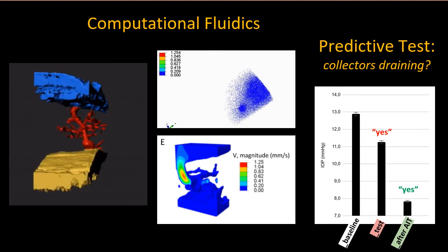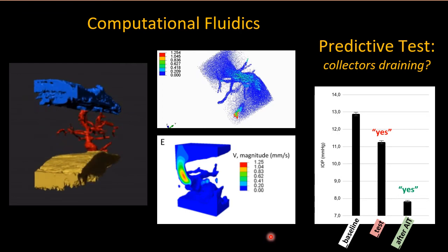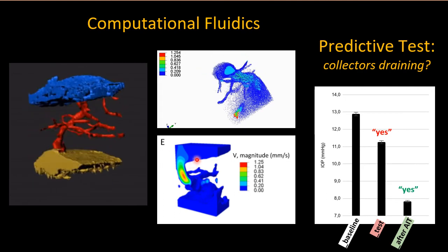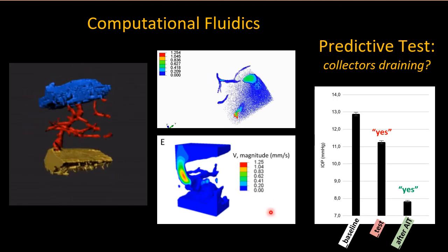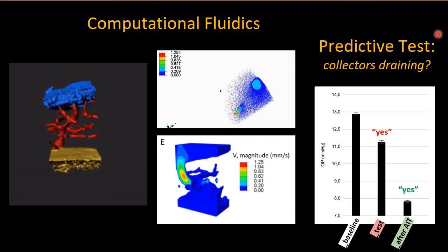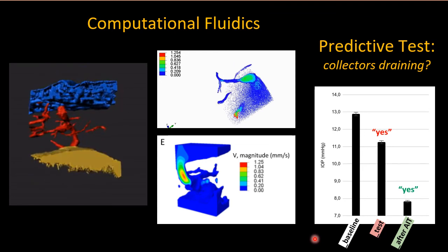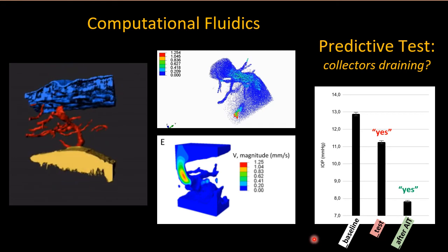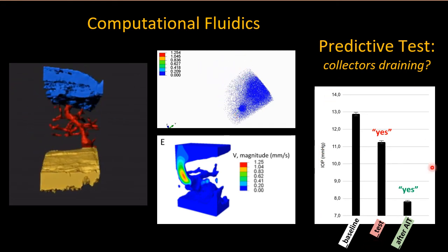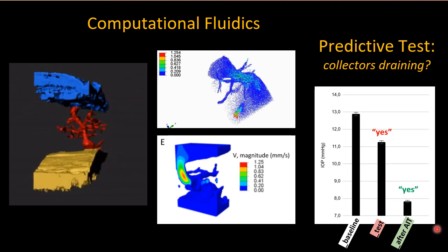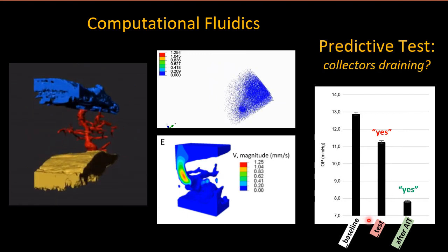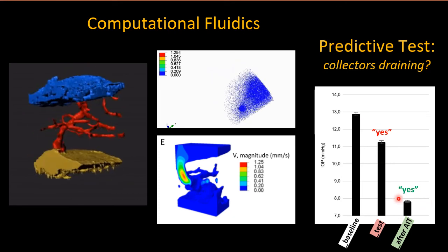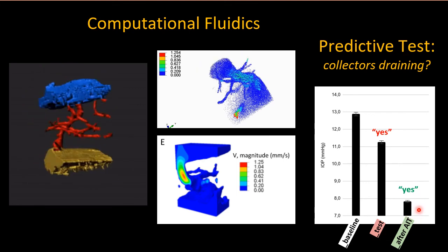As an outlook, we explored computational fluidics, which is challenging but can pinpoint areas of high flow resistance. The goal is to compute outflow for the entire outflow tract. Clinically, the more relevant question is: how can you predict how much flow will occur in a patient when the trabecular meshwork is removed — will the collectors function or not? We believe we do have a test, demonstrated in an ex vivo pig eye model and also in human patients. In 16 eyes, a deployed test predicts whether clinical ablation of the trabecular meshwork will result in outflow or not.